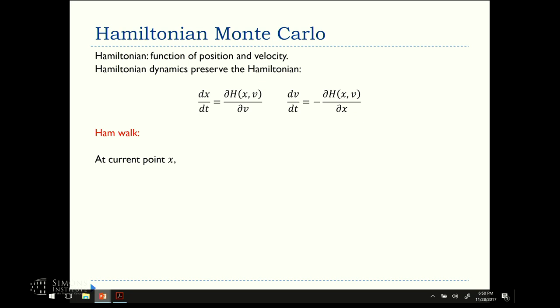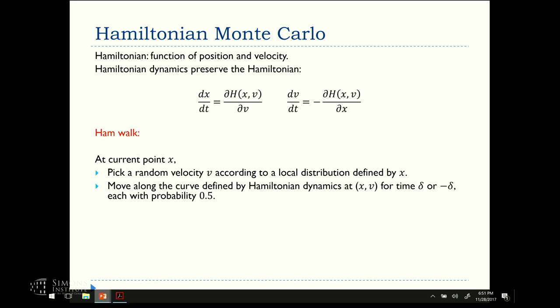So, that's the Hamiltonian walk. At current point X, pick a random velocity. How do you pick the random velocity? According to the current distribution defined by X, according to the local metric. So, a Gaussian with that covariance matrix, and then you move along the curve, no longer straight lines. These are curves defined by the Hamiltonian. In the direction V, for some time, Delta or minus Delta, just to symmetrize everything. So, that's the process.